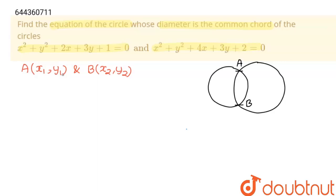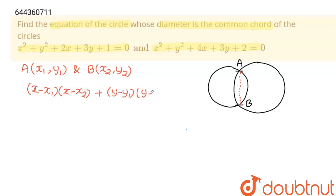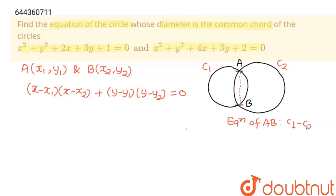We have to find x1, y1, x2, y2. If we get those values, we can write the equation of the circle in diameter form: (x - x1)(x - x2) + (y - y1)(y - y2) = 0. To do this, I am going to find the equation of chord AB, which is C1 minus C2 equals 0.